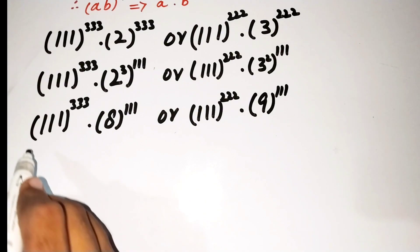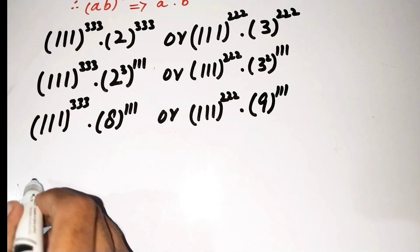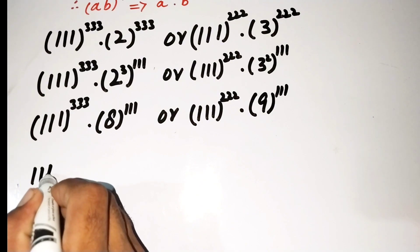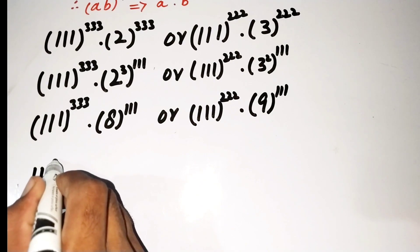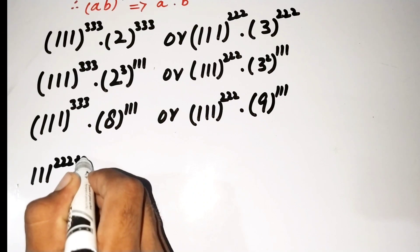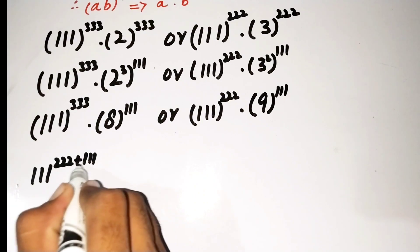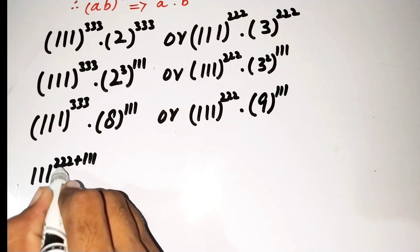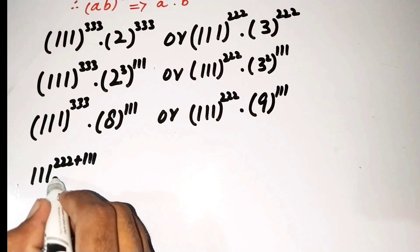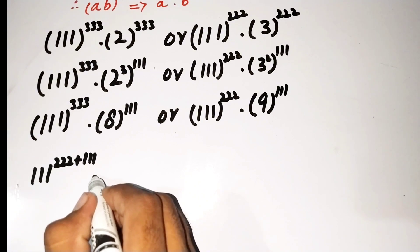Now we can write 111^333 as 111 raised to the power of triple 2 plus triple 1, since the sum of 222 and 111 equals 333. Yes, of course we can write it like this.